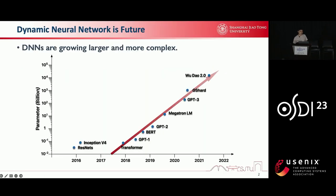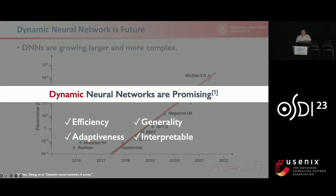Across the years, models are growing larger and more complex. It is challenging to deploy these models either in the cloud or edge. To address this challenge, dynamic neural networks appear to be a promising choice because they have many favorable properties such as computing efficiency, adaptiveness, generality, and interpretable model definition. For example, GPT-4 might use a dynamic neural network called MOE.